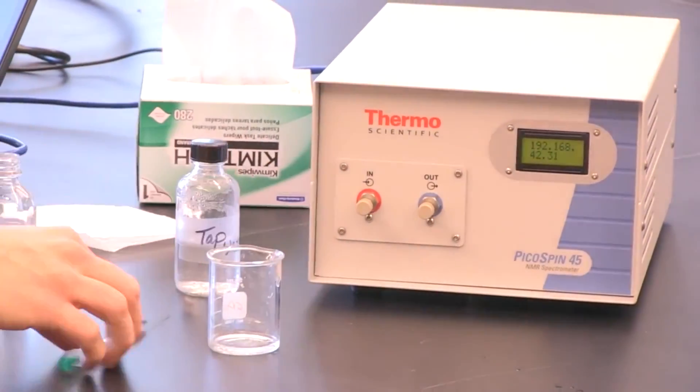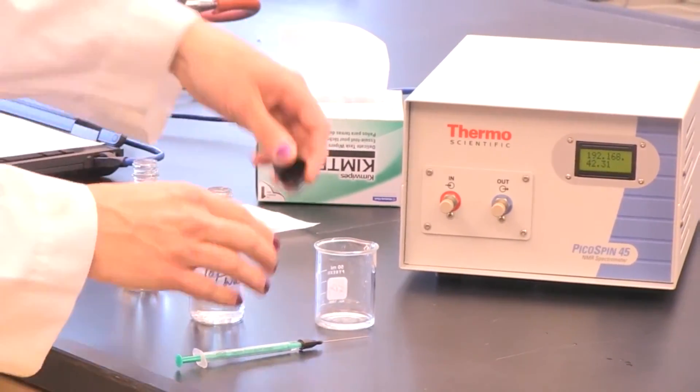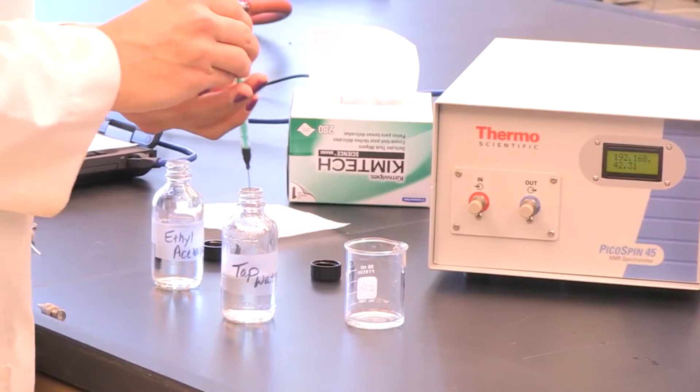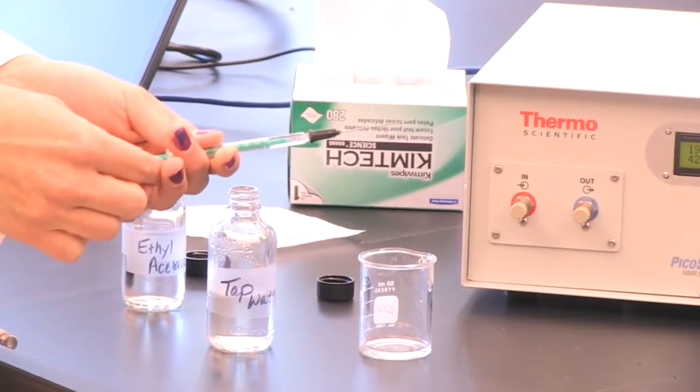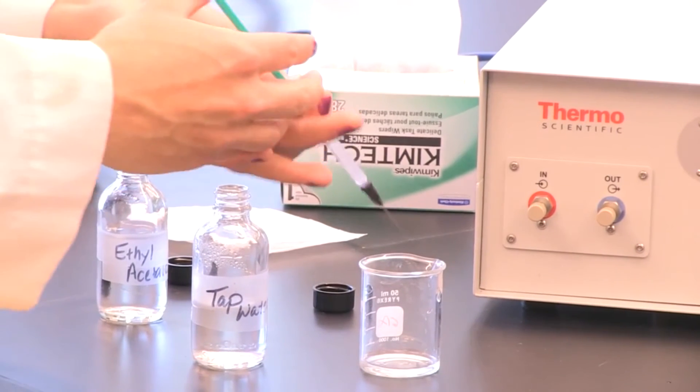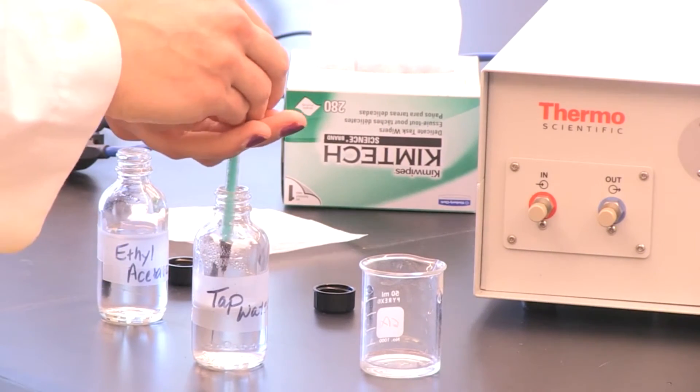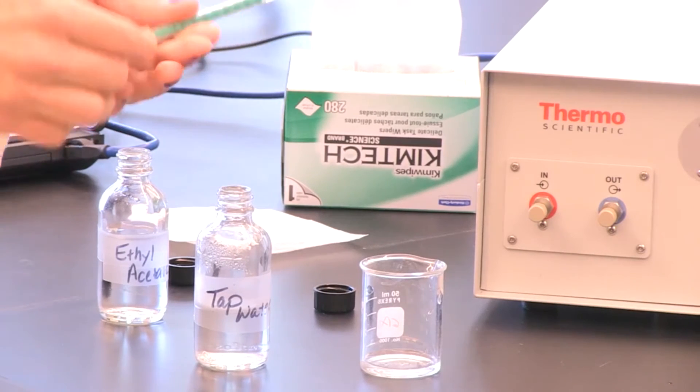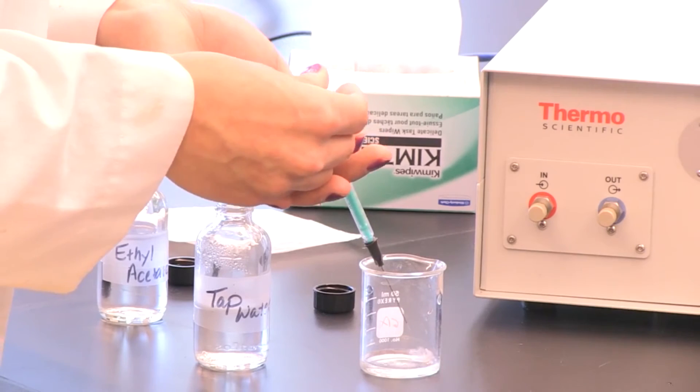Then you are going to want to clean your syringe for the next user. And you can do this just by rinsing it with tap water the way we rinsed it with the sample. So just draw some tap water into the syringe and pull it all the way through. And then release it into the waste container. And then do this again. Now the syringe is cleaned for the next user.